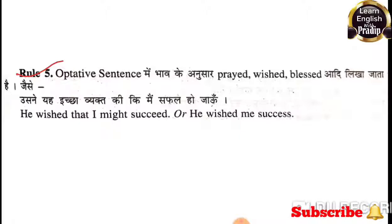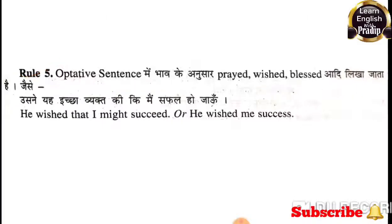पाँचवाँ रूल कहता है: optative sentences में भाव के अनुसार 'prayed', 'wished' या 'blessed' आदि लिखा जाता है। जैसे: उसने यह इच्छा व्यक्त की कि मैं सफल हो जाऊँ — He wished that he might succeed.